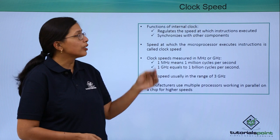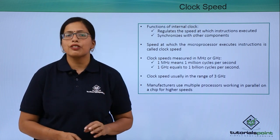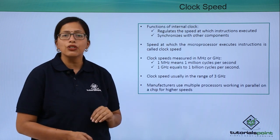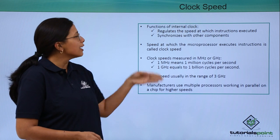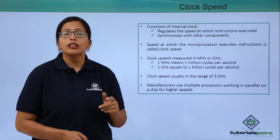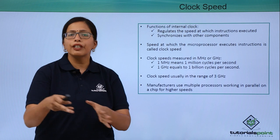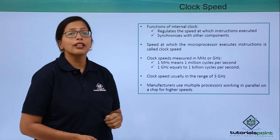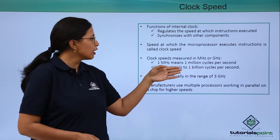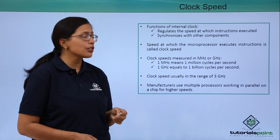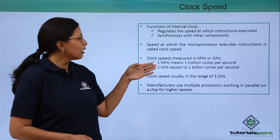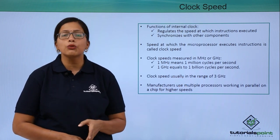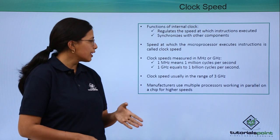So let's first look at what we mean by clock speed. Every microprocessor has a clock. The clock regulates the speed at which instructions are executed, and it also synchronizes all the other components and different parts of the microprocessor. The speed at which the microprocessor executes instructions is called the clock speed, and it is generally measured in megahertz or gigahertz. One megahertz means 1 million cycles per second, whereas 1 gigahertz is equivalent to 1 billion cycles per second.